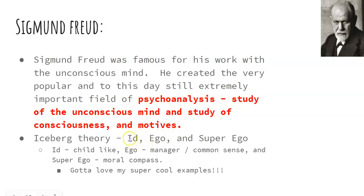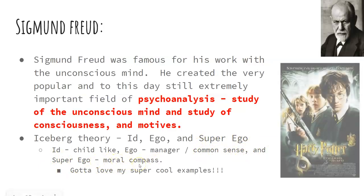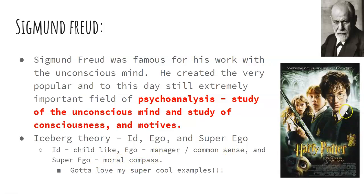Freud believed we all have particular pieces to ourselves: the id — the very childlike piece; the ego — the manager or taskmaster; and the superego — the moral compass. I like to use Harry Potter as an example because id, ego, and superego are super prevalent there. We have our id, Ron — he's very childlike. Then we have our ego, Hermione — she's very driven, cunning, smart, and common-sense driven. Then we have our superego, Harry Potter — he's very moral, very 'I can't have you involved because you're going to get hurt.' It's kind of annoying, but I love Harry Potter.